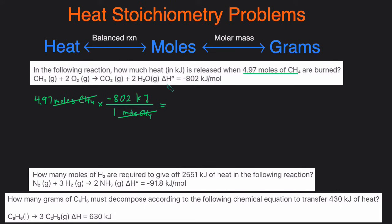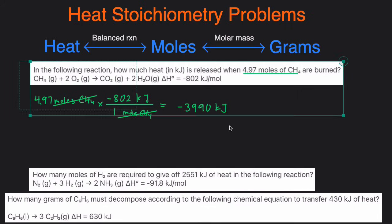We just plug this into the calculator: 4.97 times negative 802. That gives us negative 3,990 kilojoules to three sig figs. That's how much heat will be given off — the negative just means that energy is released. That's the first example.